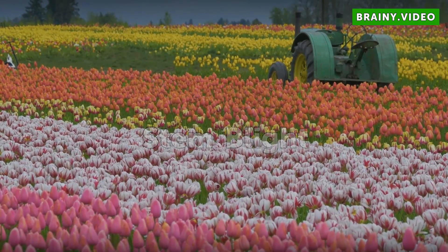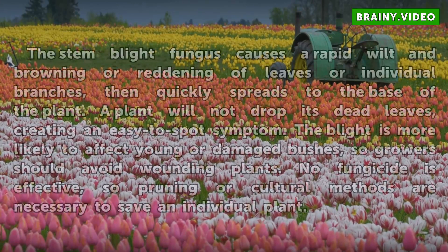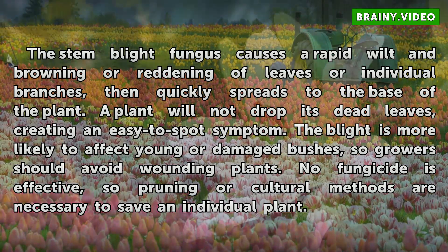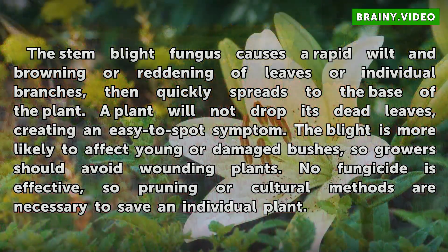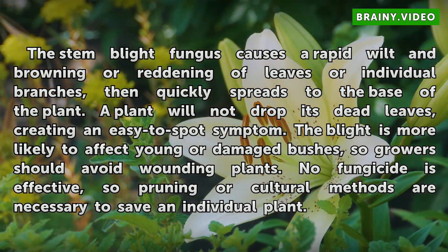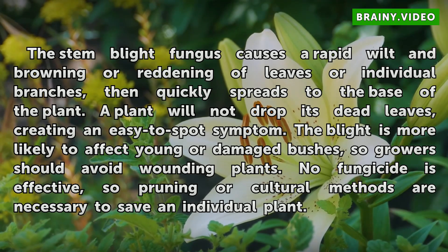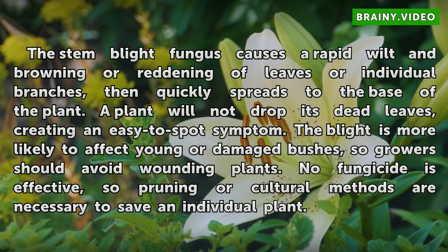Stem blight. The stem blight fungus causes a rapid wilt and browning or reddening of leaves on individual branches, then quickly spreads to the base of the plant. A plant will not drop its dead leaves, creating an easy-to-spot symptom. The blight is more likely to affect young or damaged bushes, so growers should avoid wounding plants. No fungicide is effective, so pruning or cultural methods are necessary to save an individual plant.